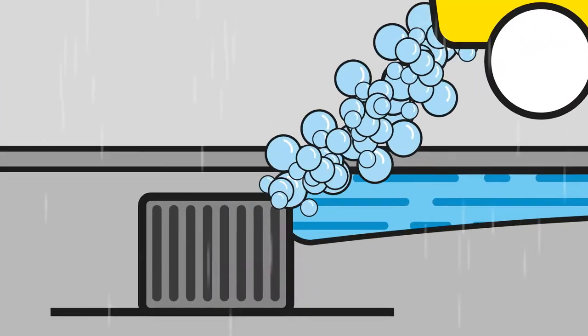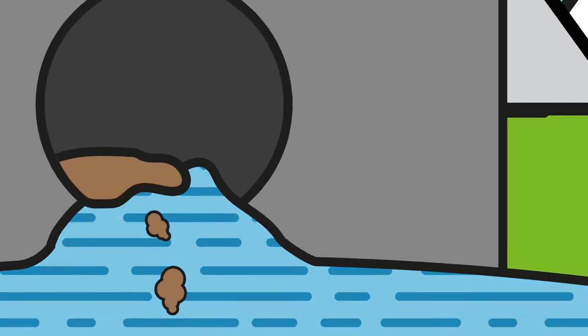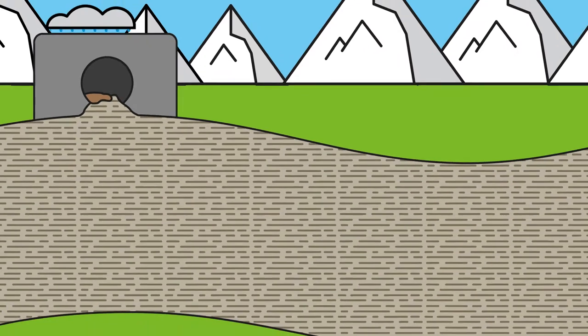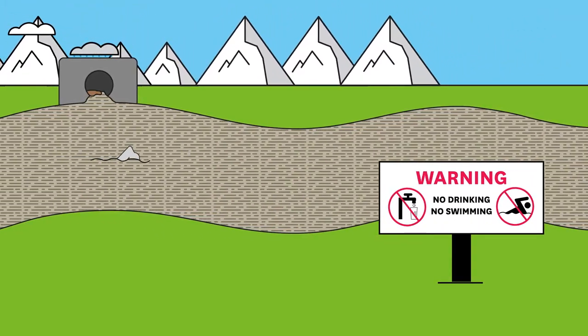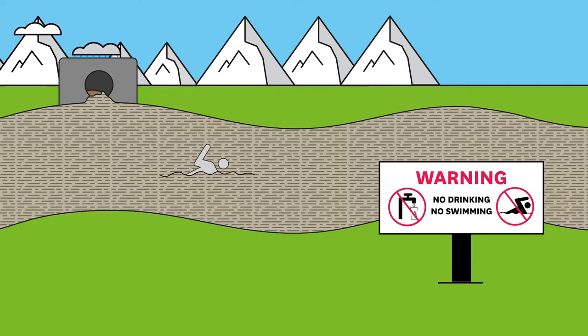Stormwater matters because on its journey it picks up dirt and rubbish which pollutes the water in our streams and rivers. This can have an adverse impact on our health and the health of our pets when we swim in or drink from these streams and rivers.